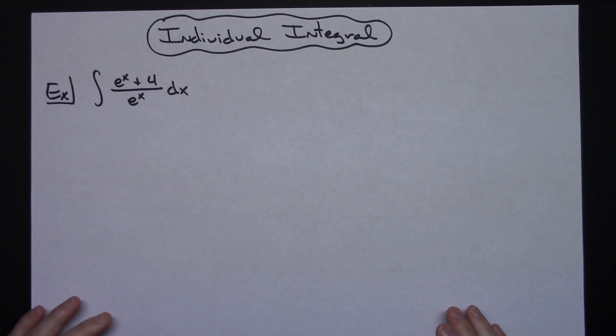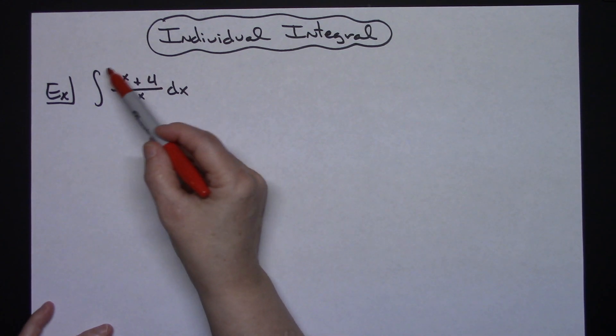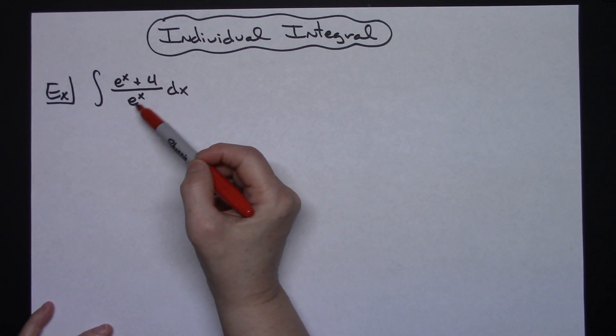In this video I'm going to work out an individual integral. It is going to be a pretty simple straightforward integral that you would typically find in a calc 1 class. We're going to integrate e to the x plus 4 over e to the x dx.